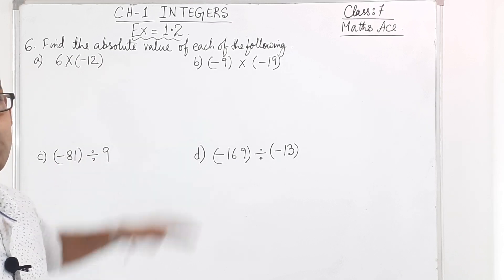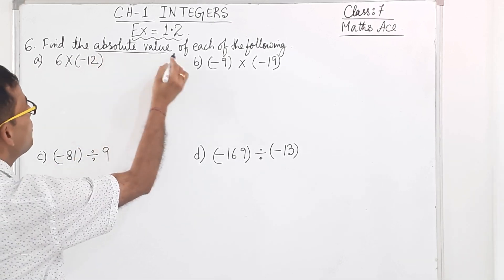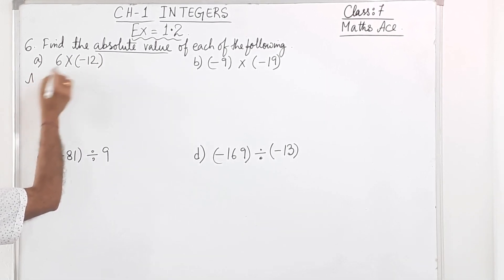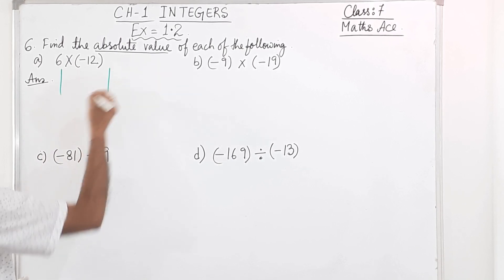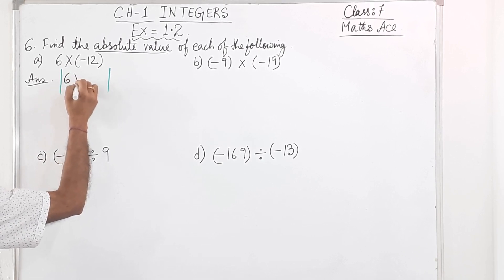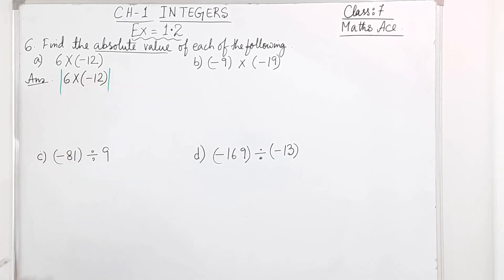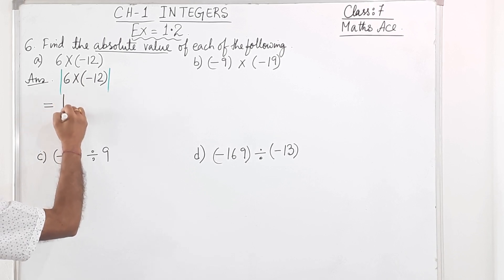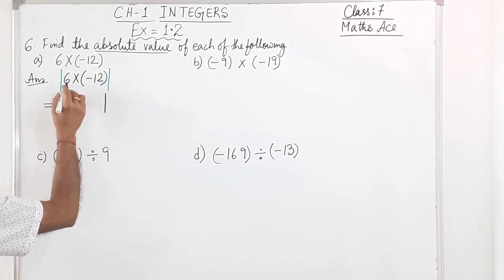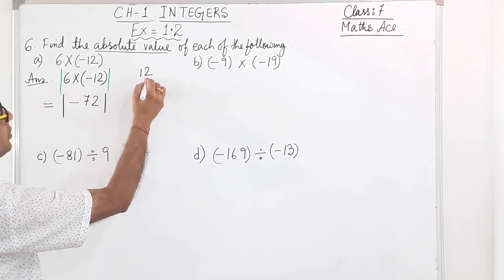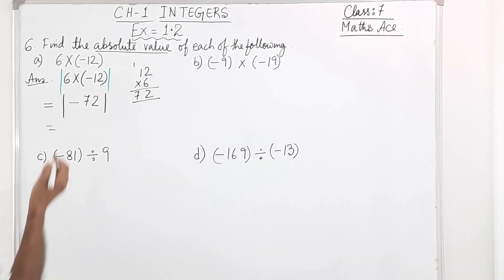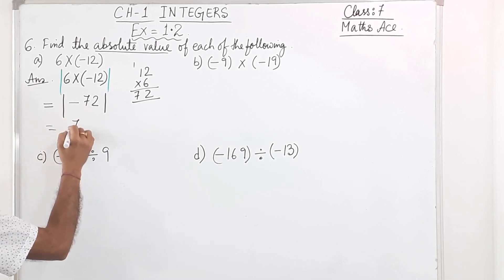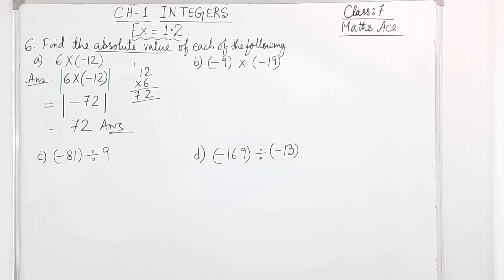Question 6: find the absolute value of each of the following. You already know about absolute value. When writing the answer, first put the absolute value symbol, then write the expression inside it. For part A: absolute value of 6 times minus 12. Plus into minus is minus, so minus 6 times 12 is minus 72 inside the symbol. Anything coming out of the absolute value is positive only, so the answer is 72.